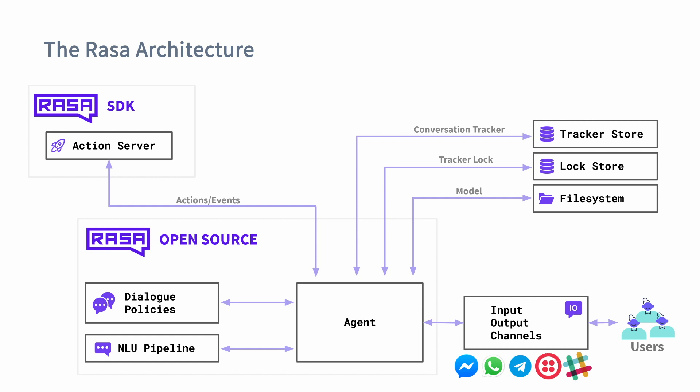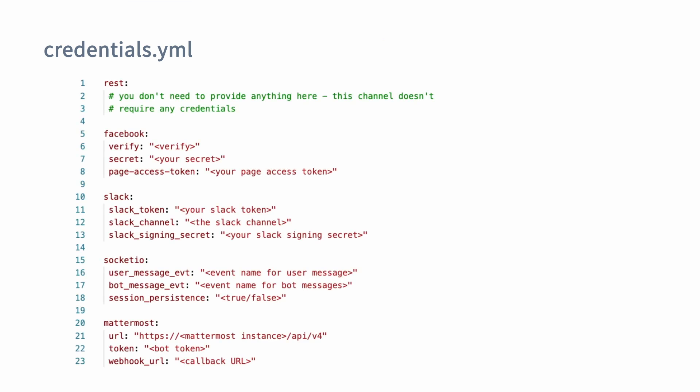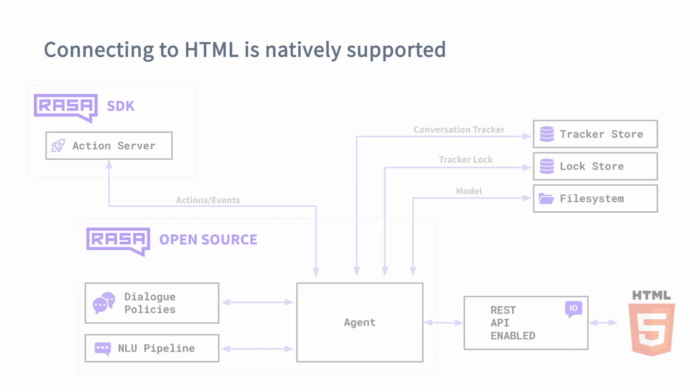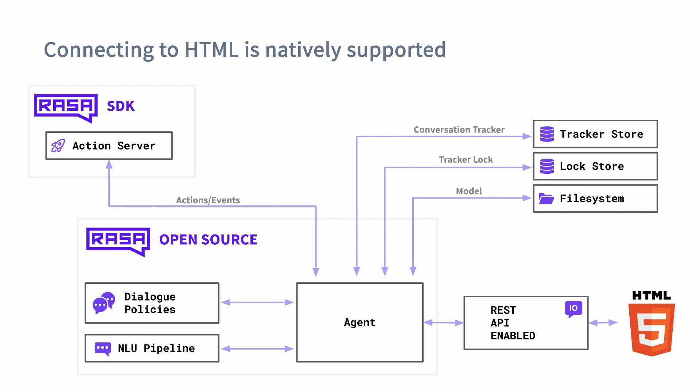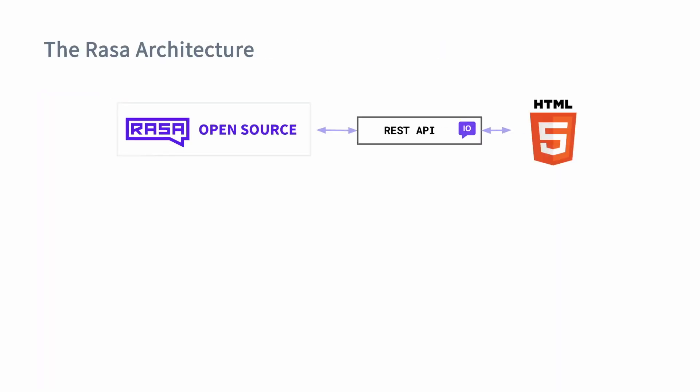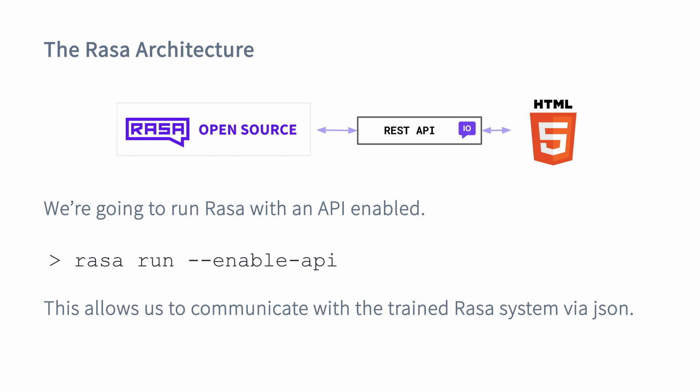Out of the box, Rasa comes with support for Facebook Messenger, WhatsApp, Telegram, Twilio, and Slack. If you'd like to use any of these platforms, you will need to configure the credentials.yaml file so that you can communicate with the messaging provider. Each messaging provider tends to require slightly different credentials, but these credentials are passed in the credentials.yaml. The Rasa docs have guides for each channel, but the channel that we will focus on in this video uses the REST channel. This is a channel that doesn't require any configuration, and it will enable us to build a custom frontend on top of Rasa. The idea is that we're going to connect a chatroom widget in the browser to Rasa via a REST API, and you can do that by calling the Rasa run command and enabling the API via a flag.